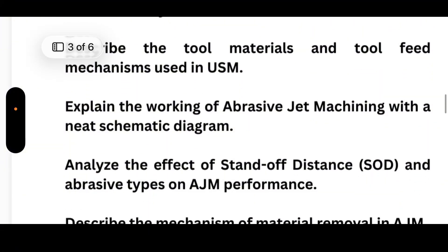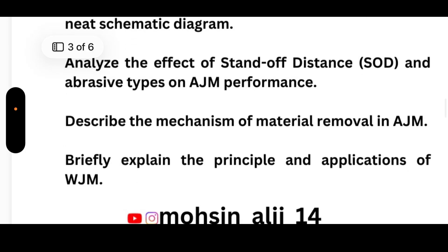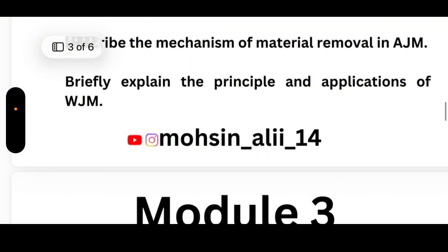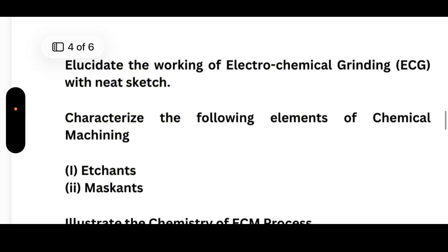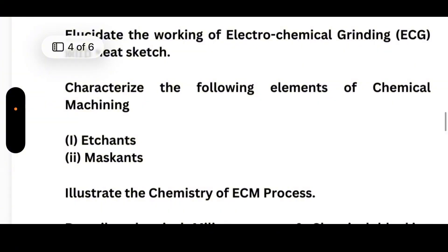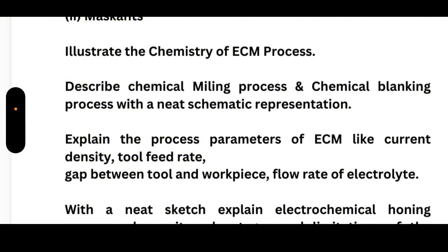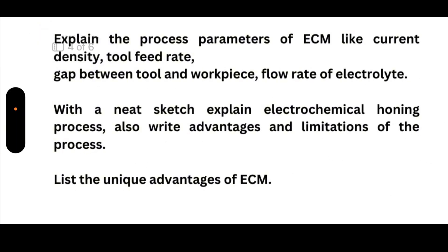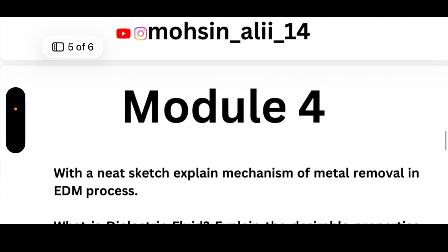Also from Module 2: analyze the effect of stand-off distance (SOD) and abrasive types on AJM performance; describe the mechanism of material removal in AJM; briefly explain the principle and applications of WJM. From Module 3: elucidate the working of Electrochemical Grinding (ECG) with a neat sketch; characterize etchants and maskants in chemical machining; illustrate the chemistry of the ECM process; describe chemical milling and chemical blanking with neat schematic representation, and sometimes the difference between them.